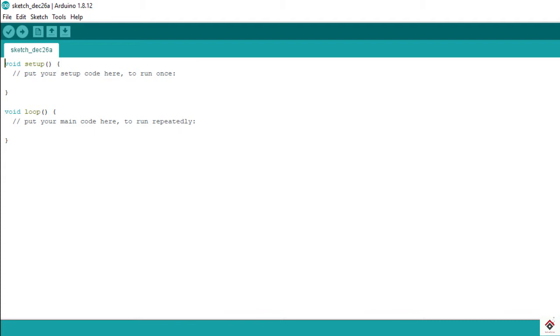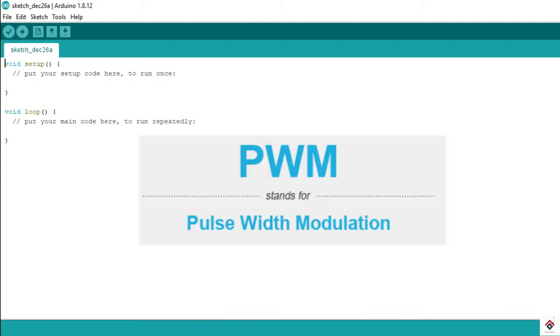So moving on to the concept, PWM stands for pulse width modulation. Also you can call it as pulse duration modulation. If you consider any square wave you can see two parts, that is the high part and the low part. This PWM concept directly deals with varying the duration for which the wave will be at the higher part. This is known as duty cycle.